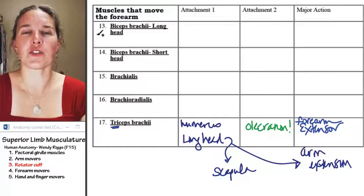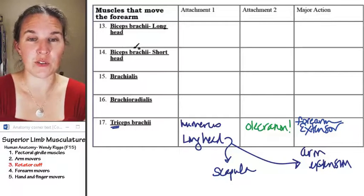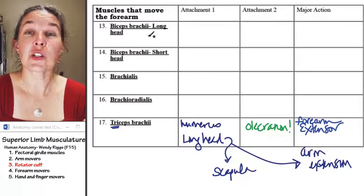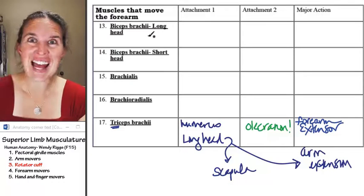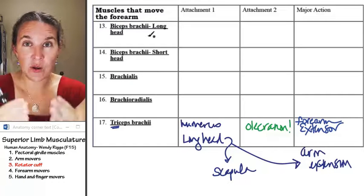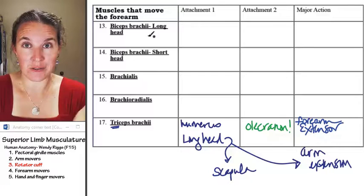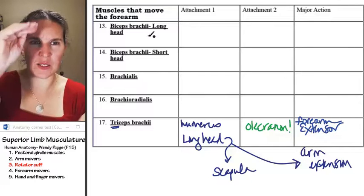Dude, who came up with intertubercular groove? The bicipital groove is way cooler. So the long head travels through that groove and comes up and attaches to the scapula by the glenoid fossa, on the superior end.